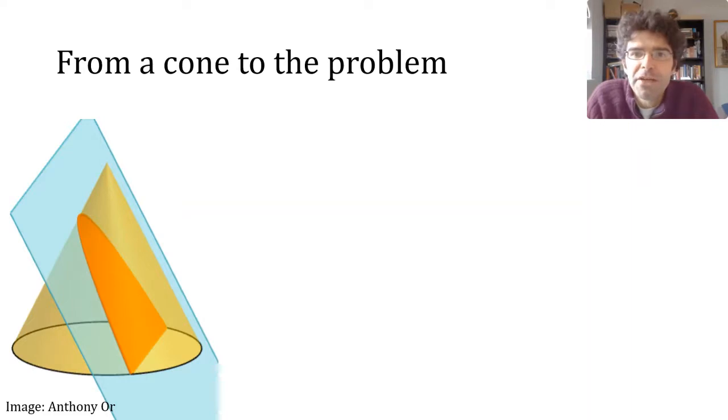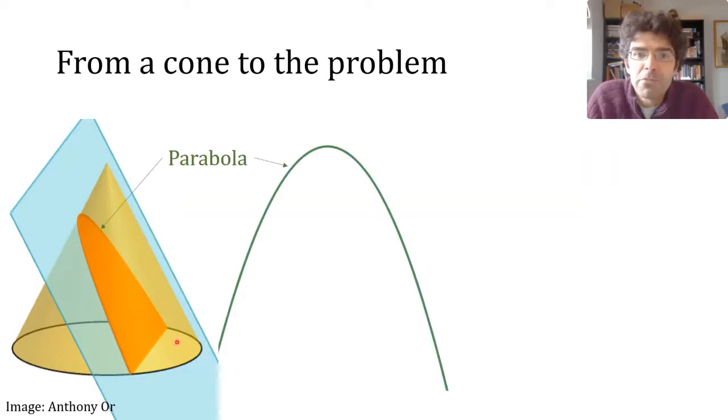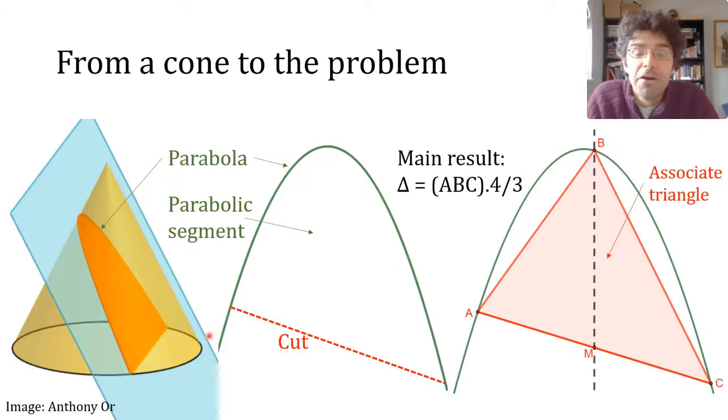But just as a quick reminder, the claim we're going to prove is that when you slice through a cone to make a parabola and then cut a segment off that parabola, the area cut off is four-thirds of the area of an associated triangle, two of whose corners are the ends of the cut, and then the third corner you go to the midpoint of the cut and then proceed in parallel to the parabola's axis of symmetry, which for us is always going to be vertically.